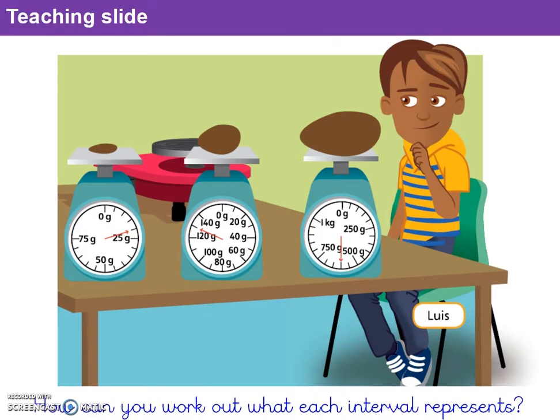Let's take a closer look at question 1a — how can you work out what each interval represents? We know that these three machines are scales. The numbers that go around tell you information. The intervals are the little lines on those scales. For example, on the far left scale we go from 0g to 75g; the middle one goes from 0g to 140g; and on the far right one, from 0g to 1kg. So we need to identify what each of those little lines represents.